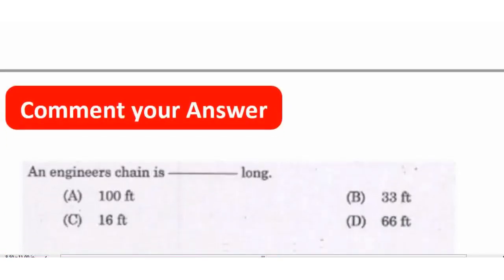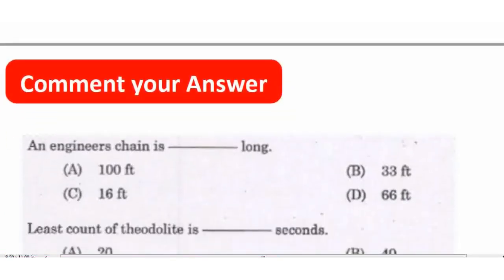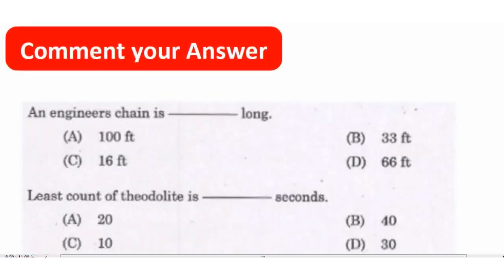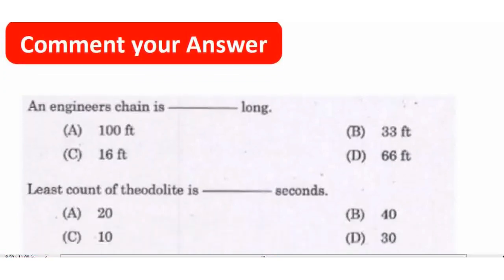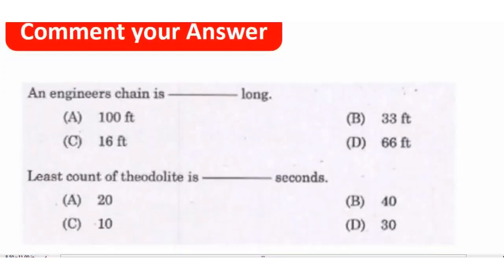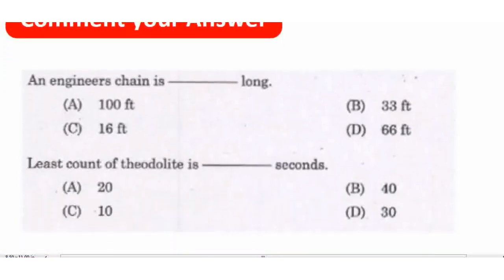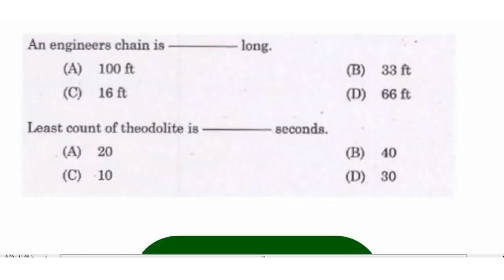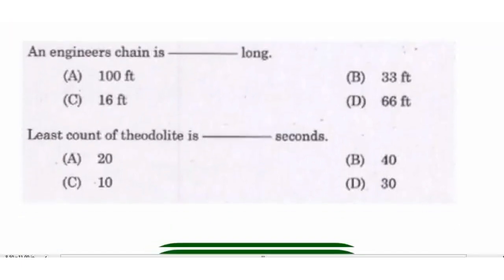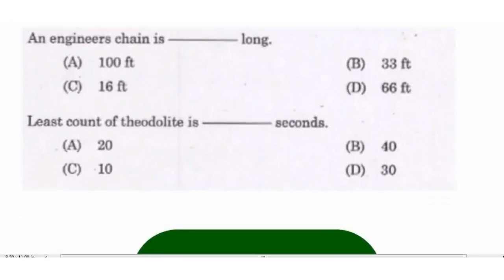An engineer's chain is 100 feet long. The least count of a theodolite is in seconds. These two questions are left for the viewers to answer in the comments. Thank you.